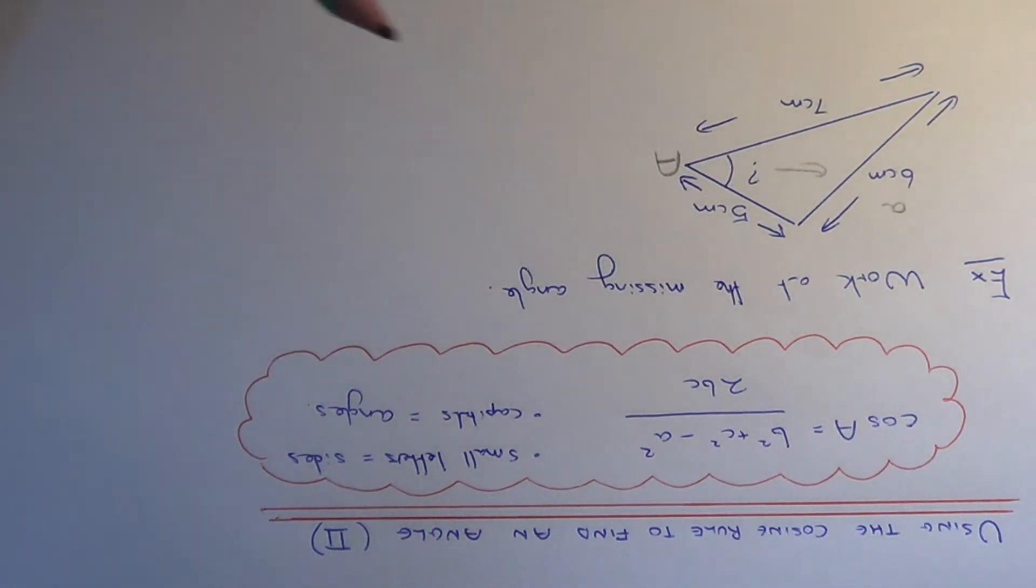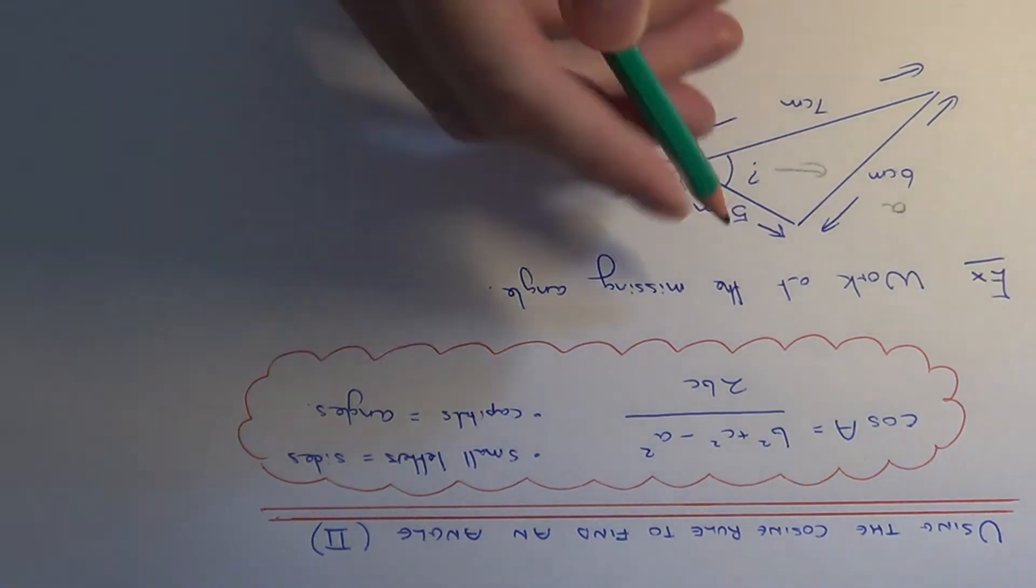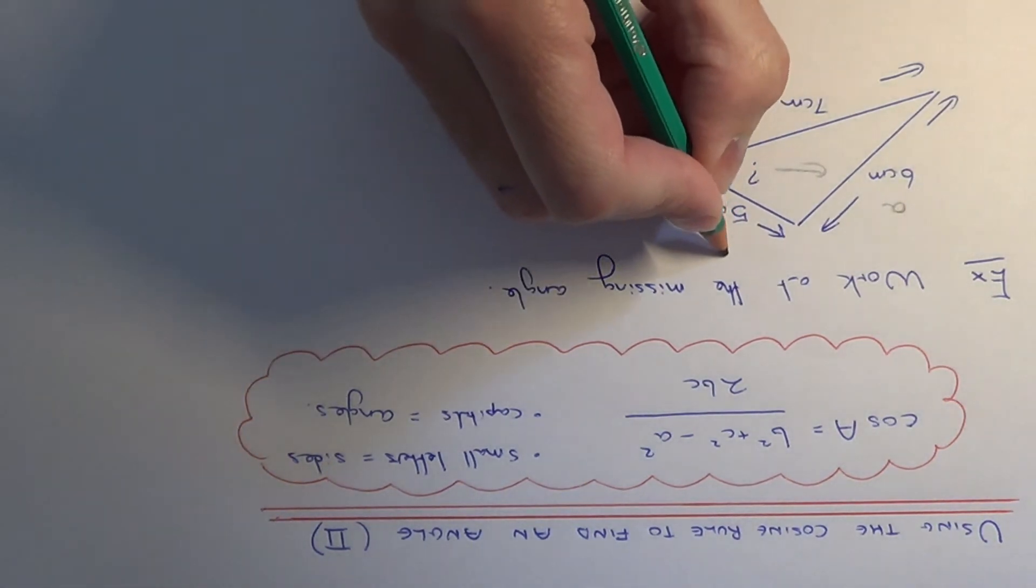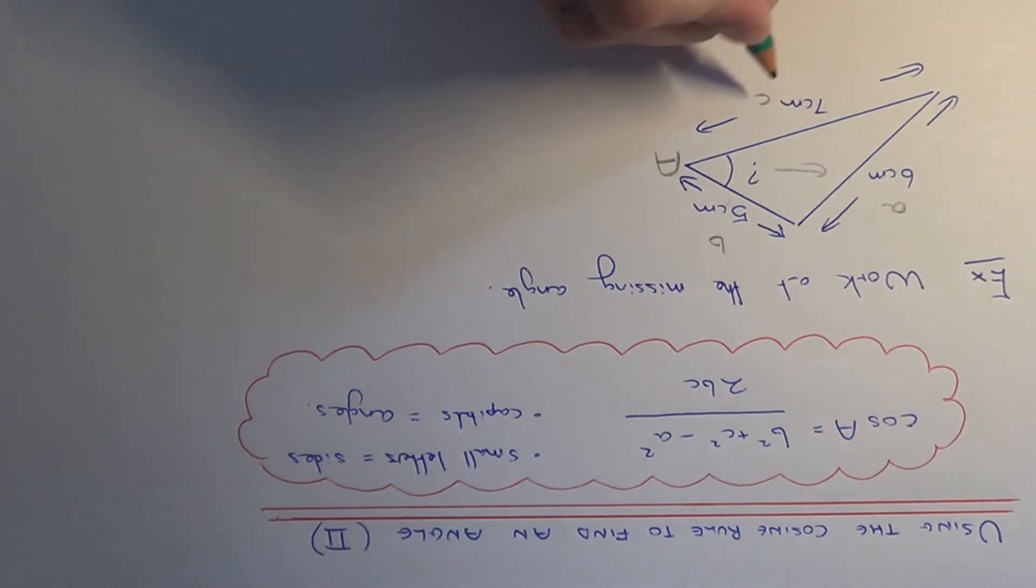So the other two sides will be little b and little c. It doesn't matter which order you label the 5 and the 7 as you will get the same answer either way. So let me call this one b and this one little c.